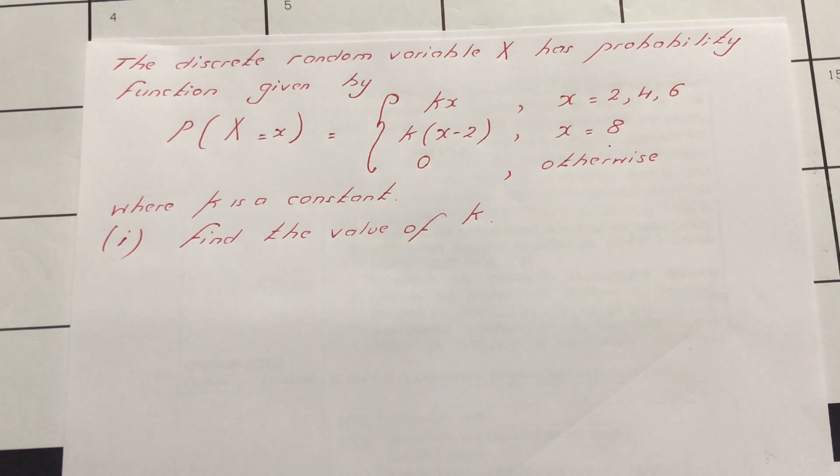Next question. The discrete random variable x has a probability function given by p(x) equals kx, where the first part of the probability function is kx, which is valid for values of x: 2, 4, and 6.